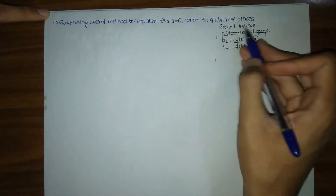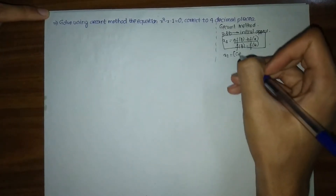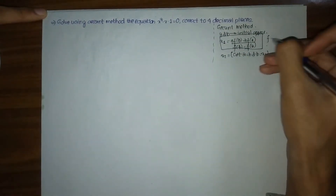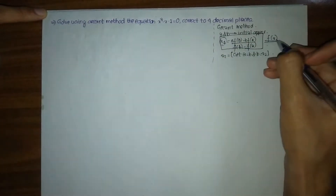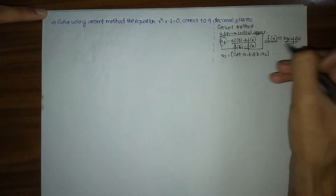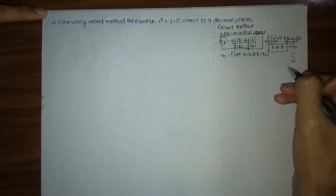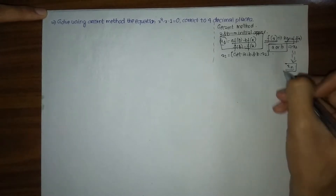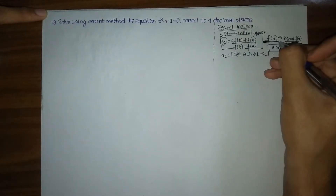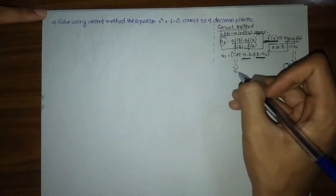The difference between the second method and the false position method is: for our second approximation x2, what we simply do is set A equals to B and B equals to x1. In false position method we used to put x1 in fx, look at the sign of fx, and replace either A or B by x1. But in the second method we do not look at the sign of fx — we simply set A equals to B and B equals to x1, and continue until we get our required root.